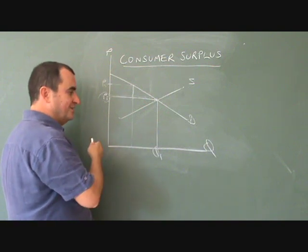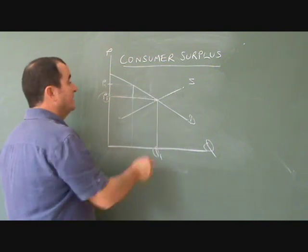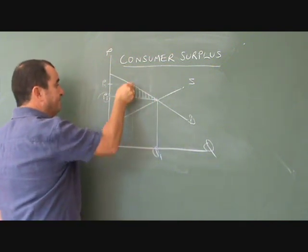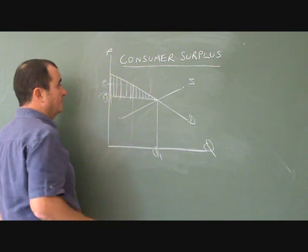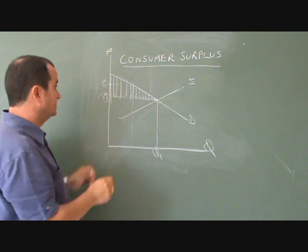But the summation, summing all, putting together all of these individual consumer surpluses gives us this area which represents the entire consumer surplus in this case.